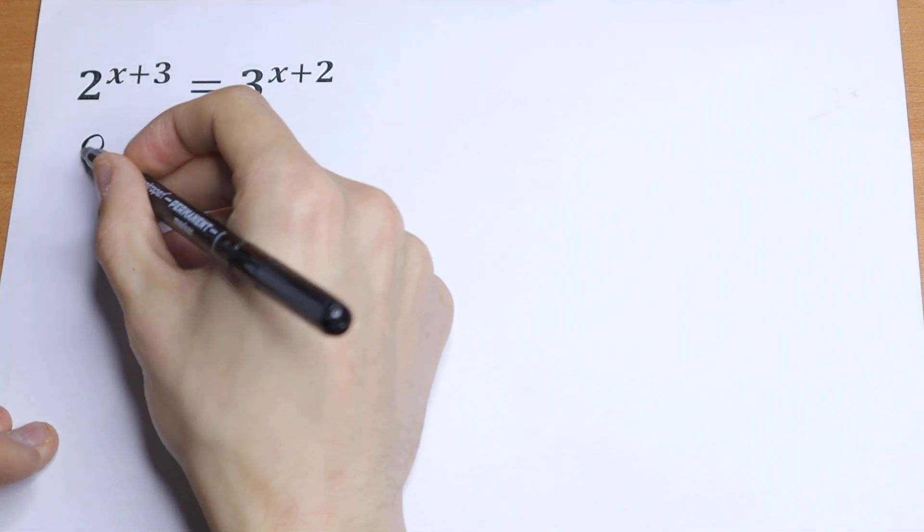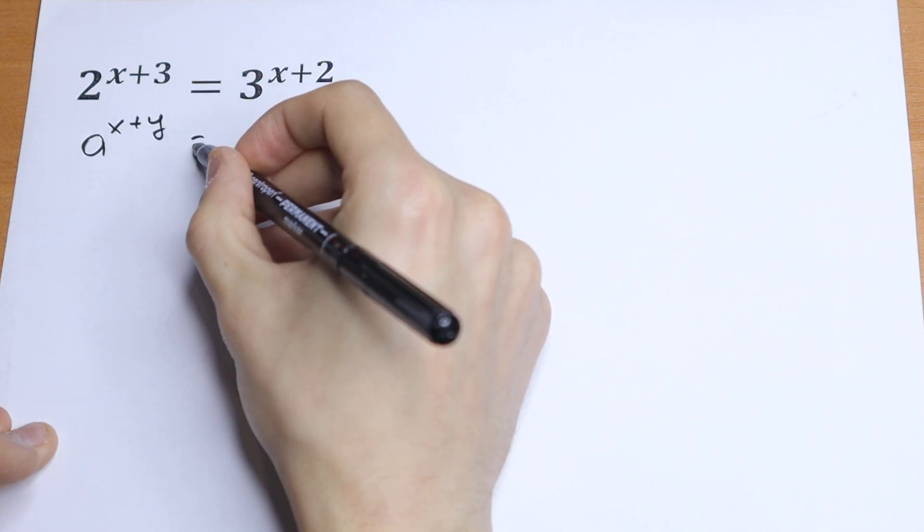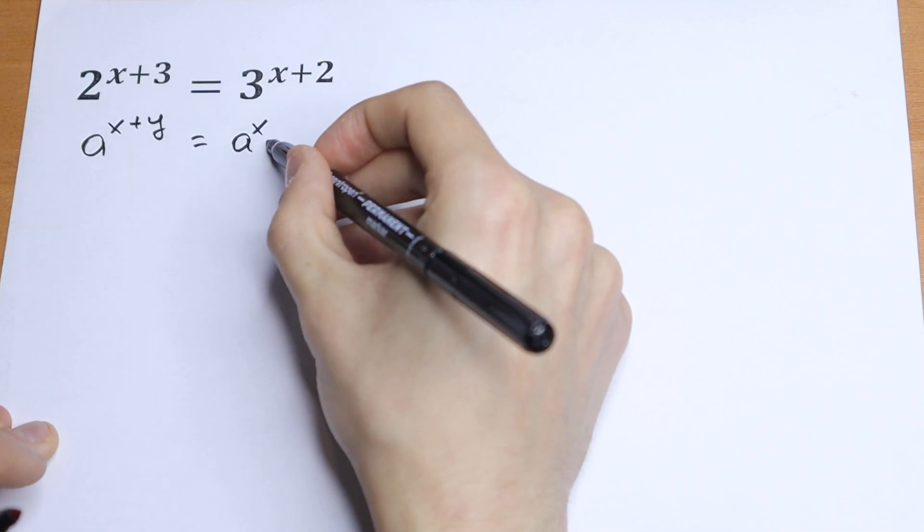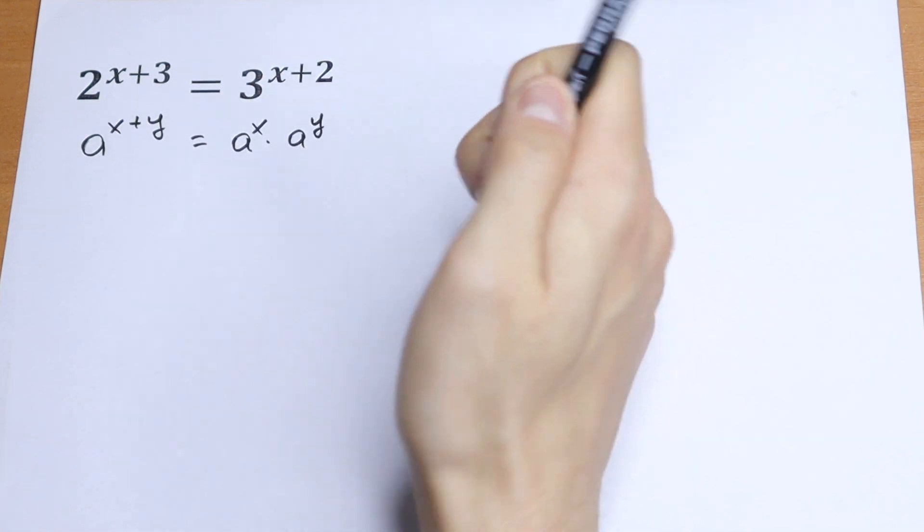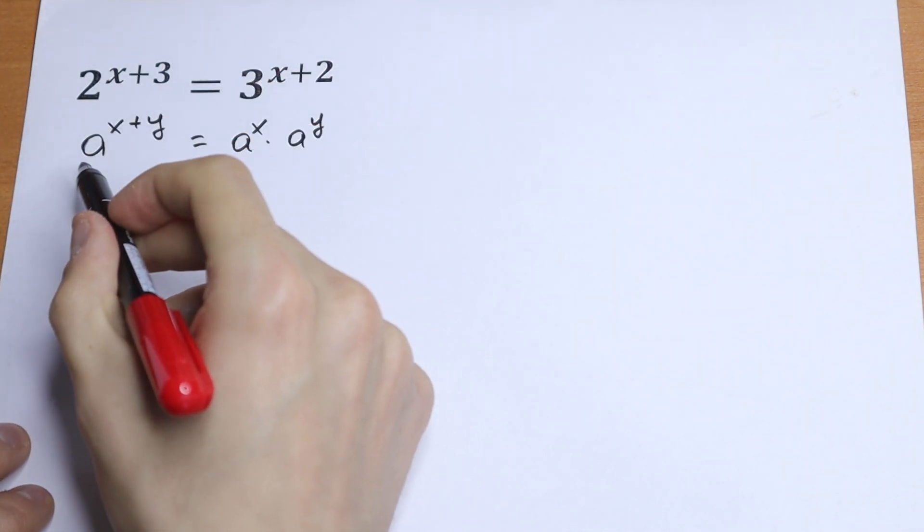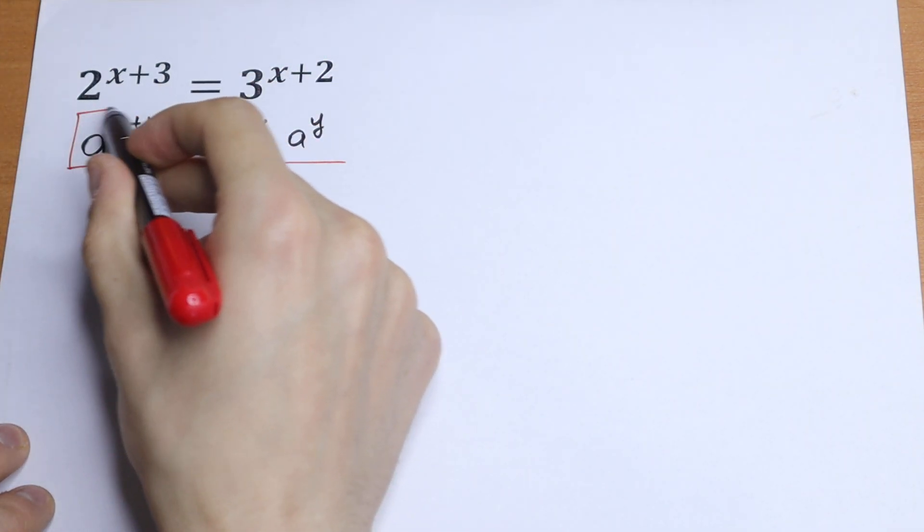If we have, for example, a to the power x plus y, we can write it as a to the power x times a to the power y. Really good rule, so use it.